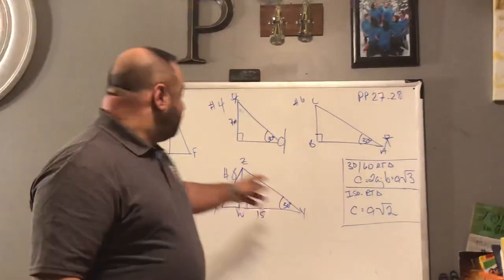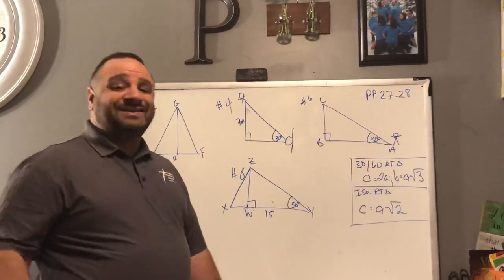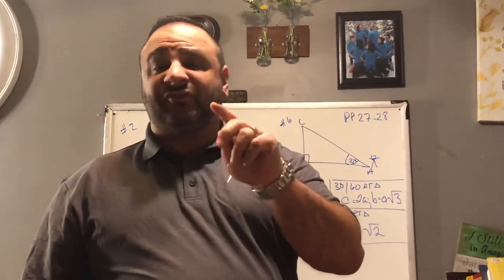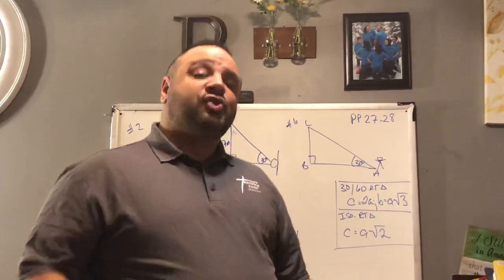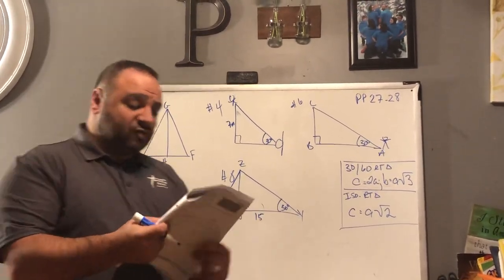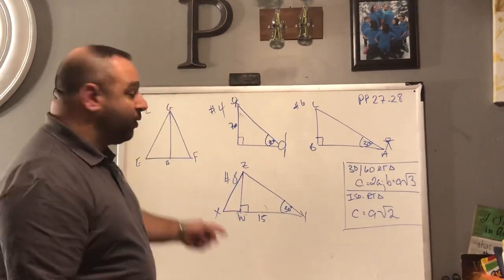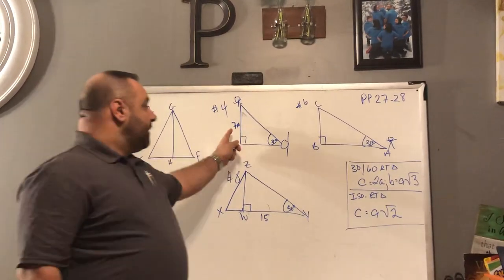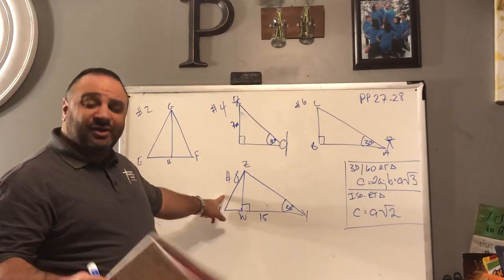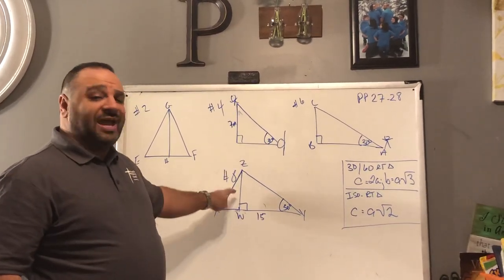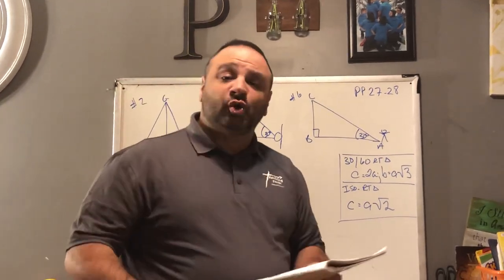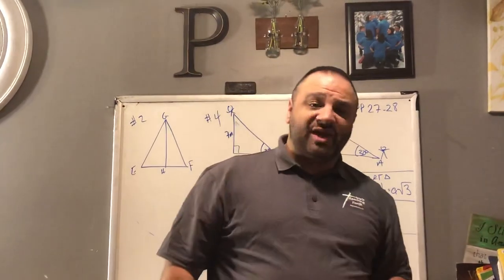Hopefully you did your homework. I again have not received some of your homework — if it's not turned in, it's an automatic zero, so be sure you get on that. Last night for homework we had to do pages 27 and 28, the even numbers. On the board we have number two, number four, number six, and then actually number eight — you did not have to do that one, but we're going to do it for added practice. Let's look at number two — turn to page 27.